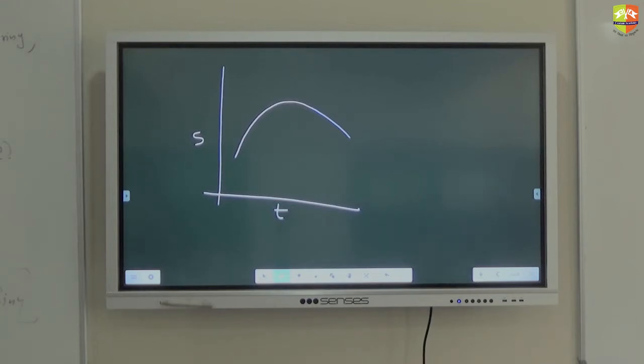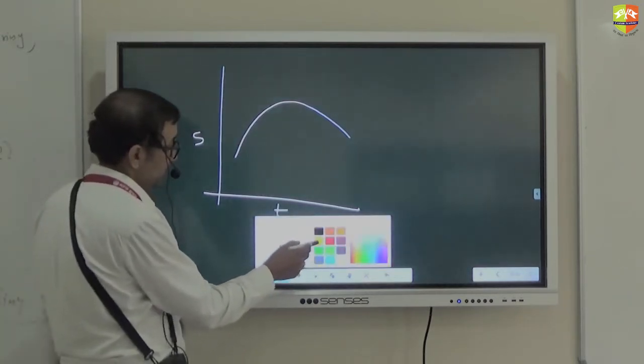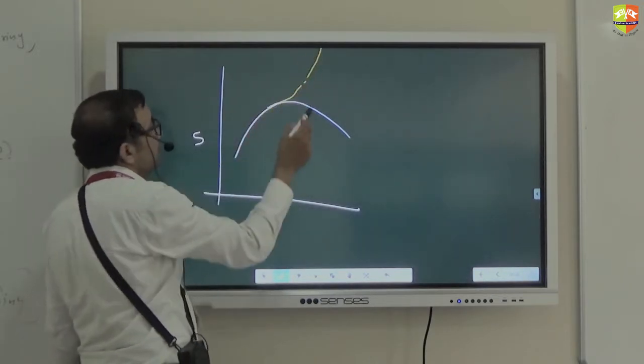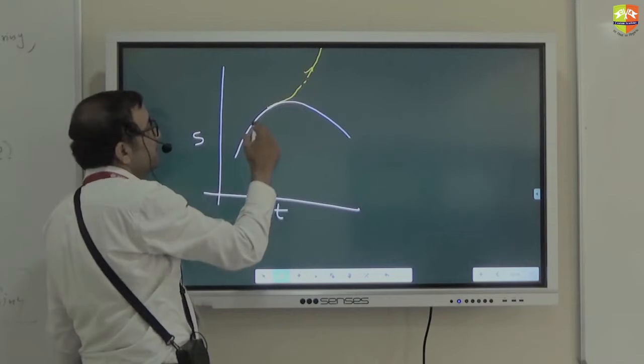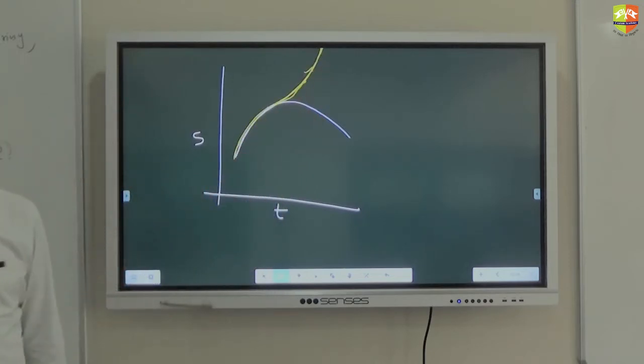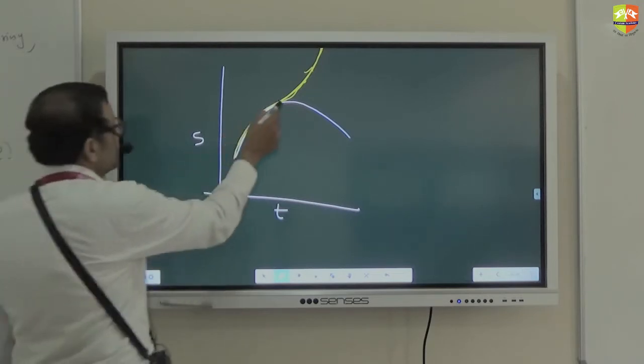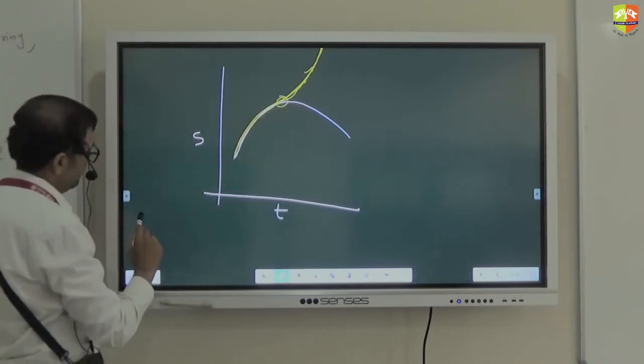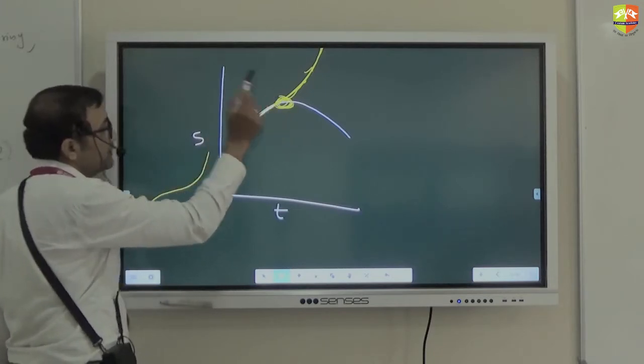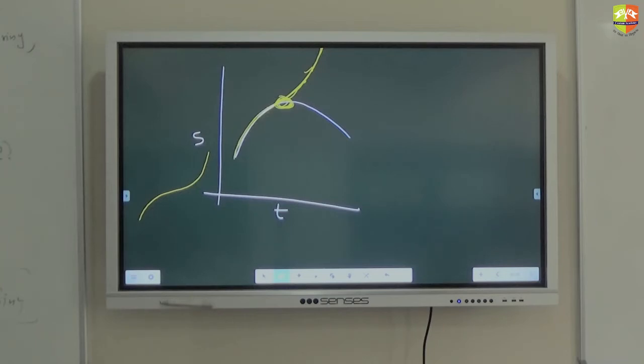Can you convert this displacement time graph into distance time graph? Yes. How to do that? Yes, it will be somewhat like this. Okay. It will... The distance will keep on increasing. Again, rate of change of distance will be 0 somewhere here. So, it will be like that. Because velocity was close to 0. Magnitude was 0 over here. Slope was 0.